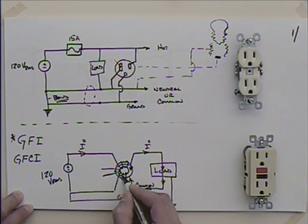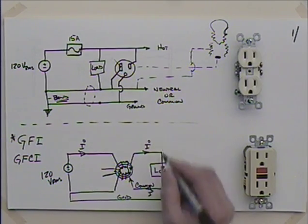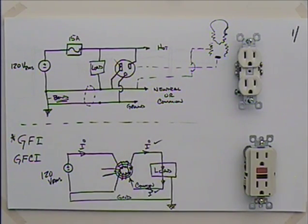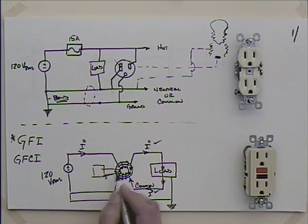The current comes out of here, the same current, goes through the load, and hopefully everything is okay in this load. The current will continue through here to the common, back through this. They wind this very carefully so that this produces a magnetic flux in the opposite direction. If this current here is the same as that current there, what do you know about those magnetic fluxes? They should be equal and opposite and cancel each other out.